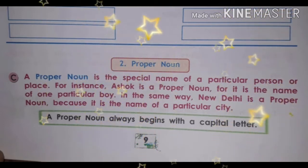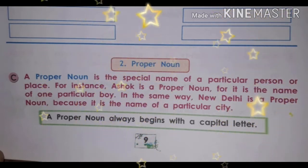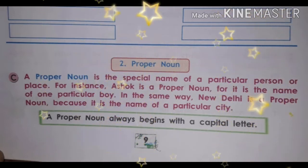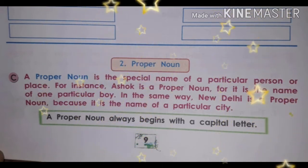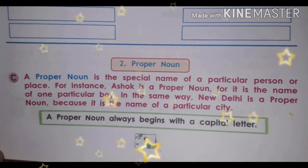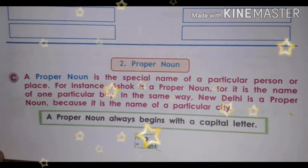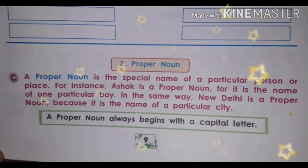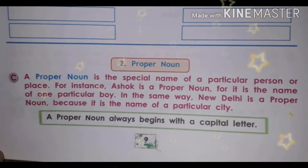So the name of a particular person or place is called a proper noun. The definition is: a proper noun always begins with a capital letter. Proper noun always starts with a capital letter. It is the name of a person — for example my name, your name, or anybody's name is a proper noun. Places known by their particular names, for example Katni, Jabalpur, Delhi, Bombay, are also proper nouns.